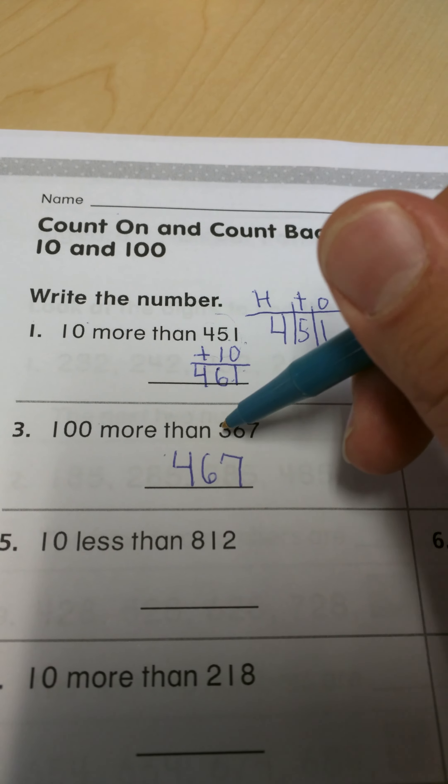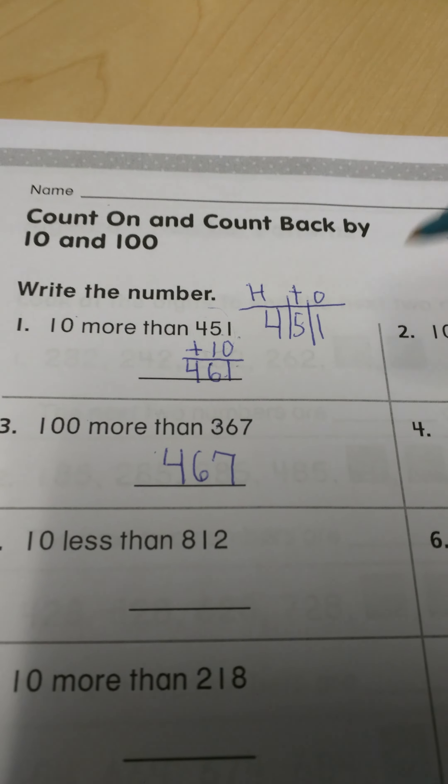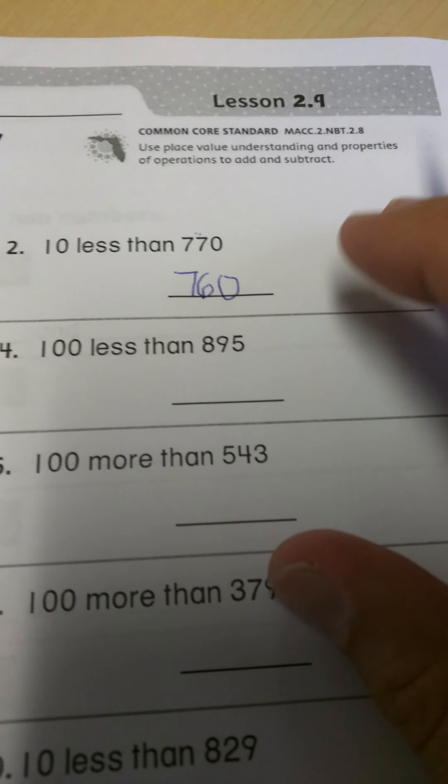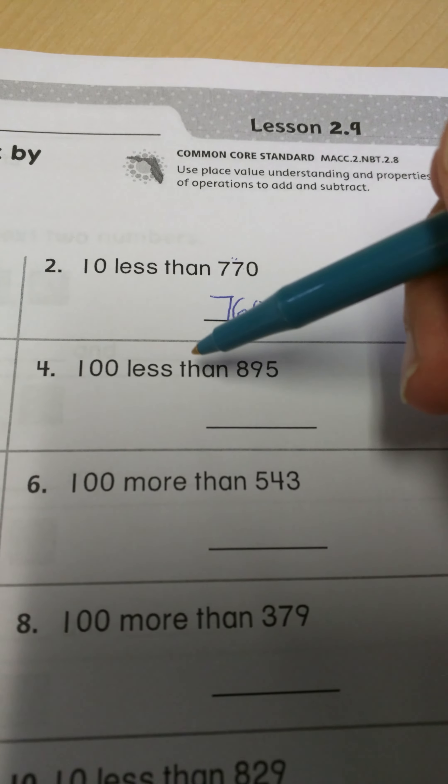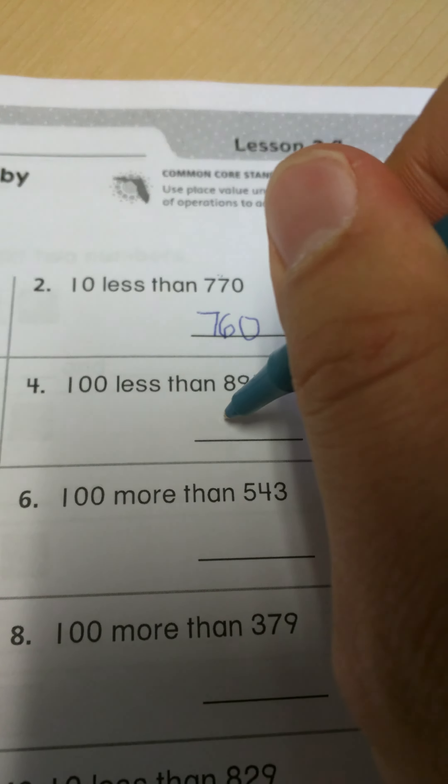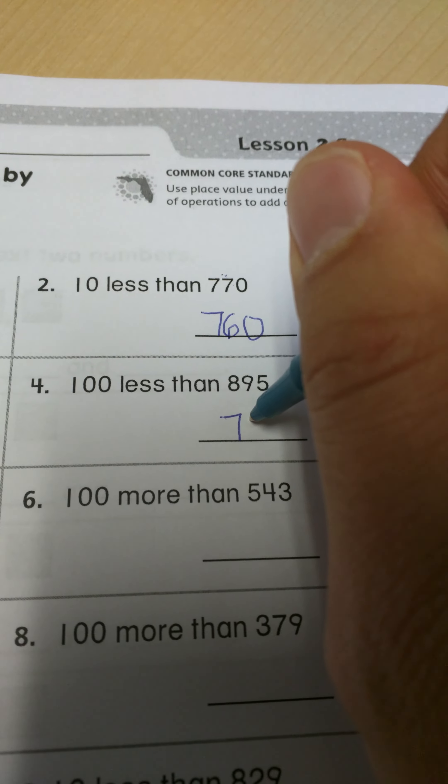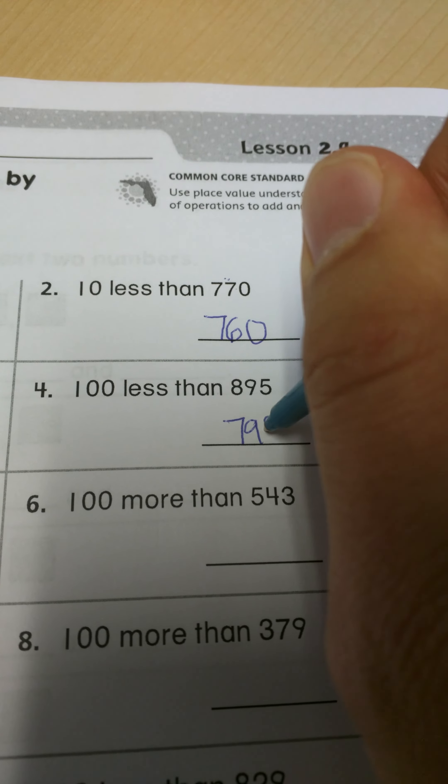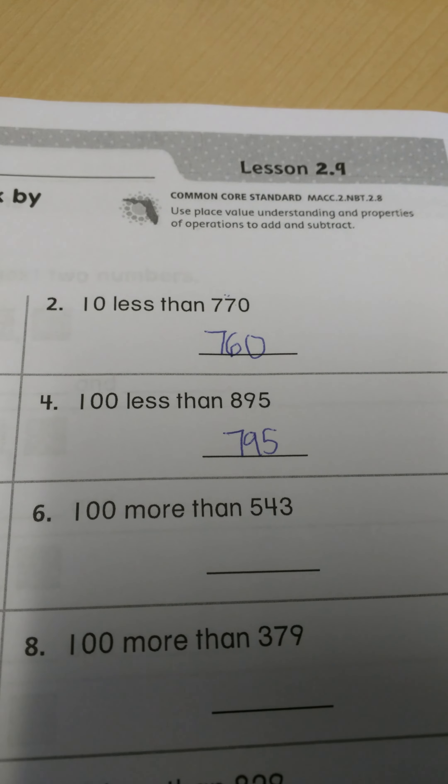And then likewise 100 less than 895. I'm just subtracting 100 from 895, so this 8 is going to turn to a 7. So it would be 795.